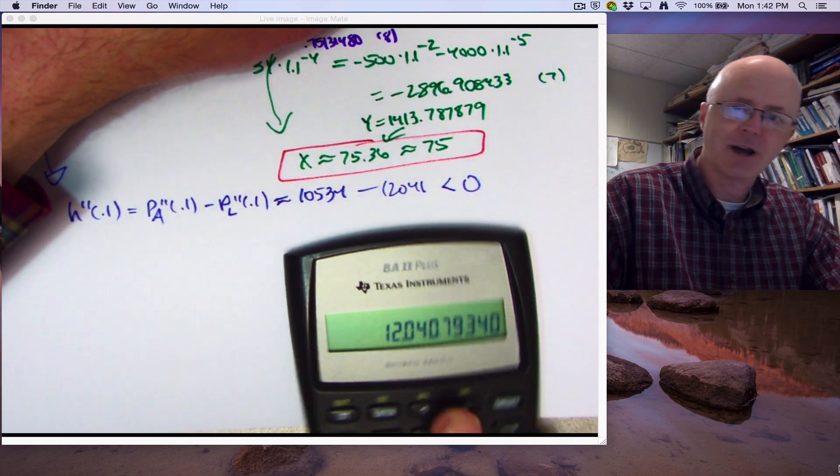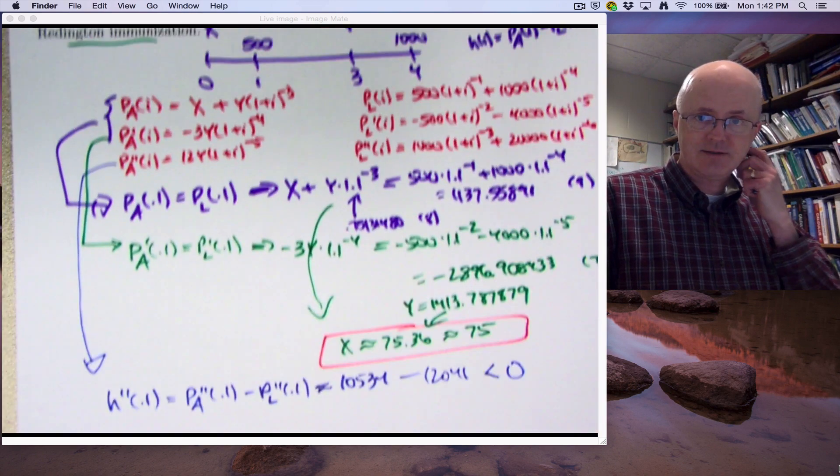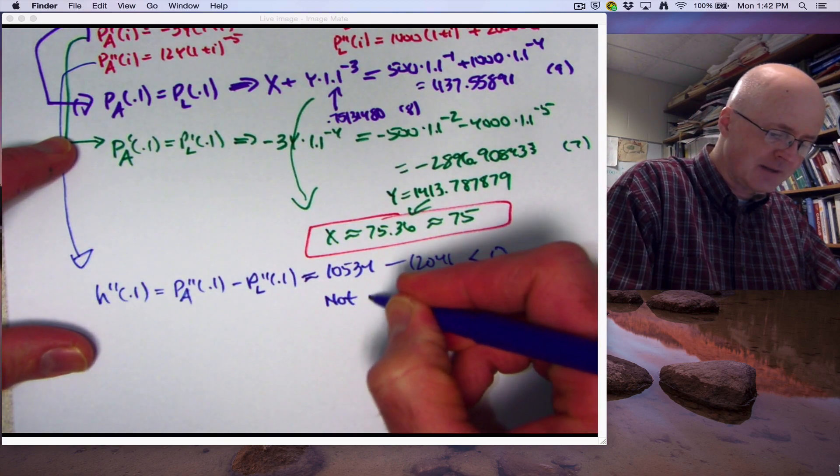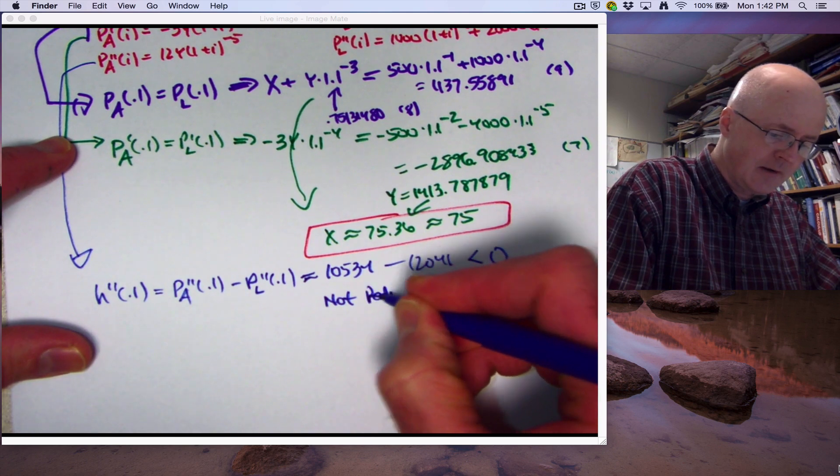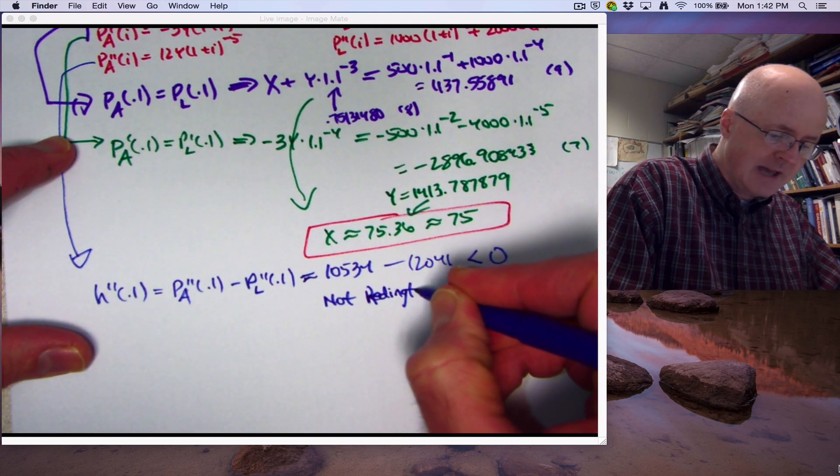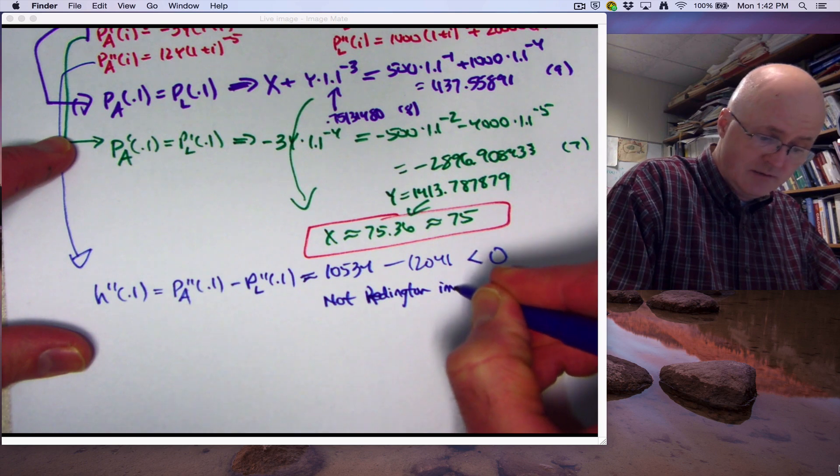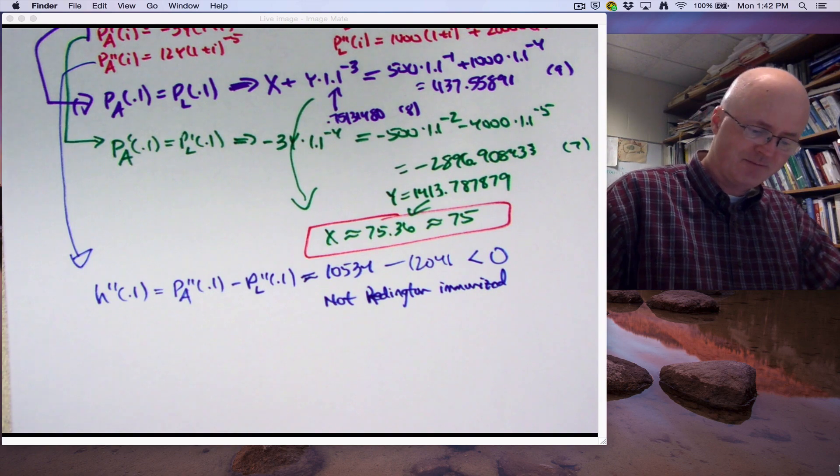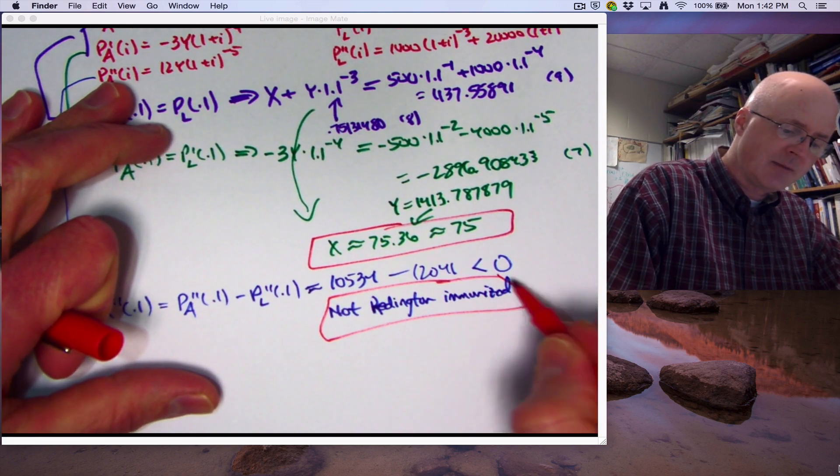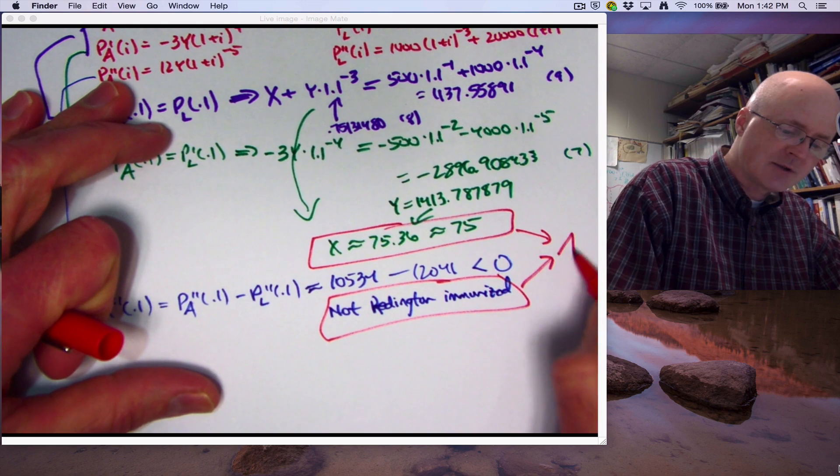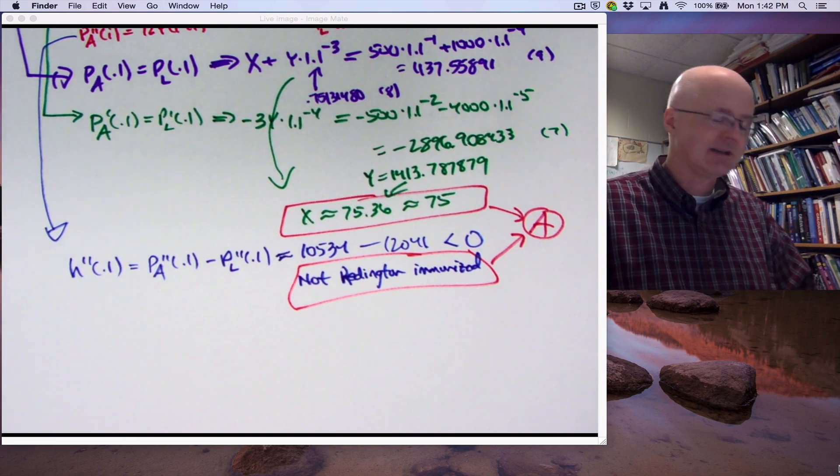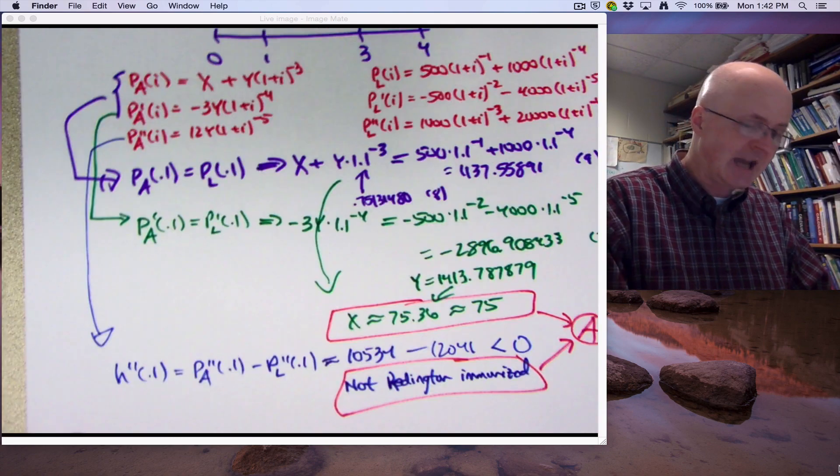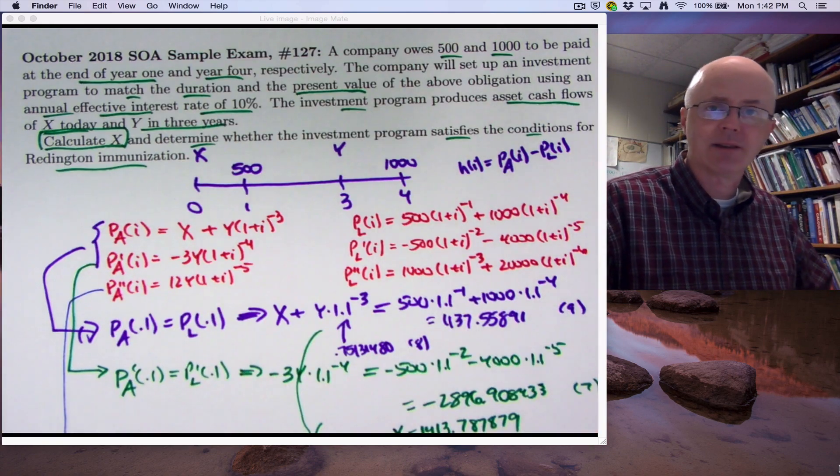The key thing is that's negative, okay? So if that's negative, that means we're not Reddington immunized. Not Reddington immunized. And that is part of the answer as well. Reddington immunization. Well, first of all, let me just circle this. And let me say these two combine to give the correct answer to be A. That's option A on the exam.